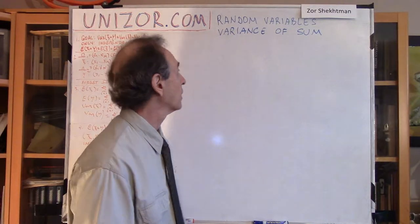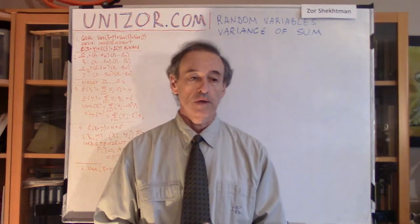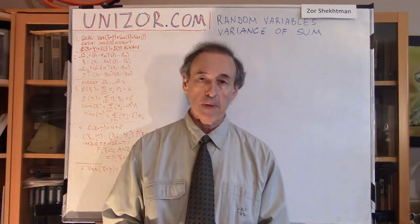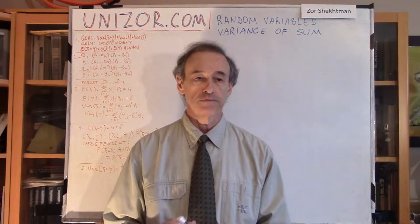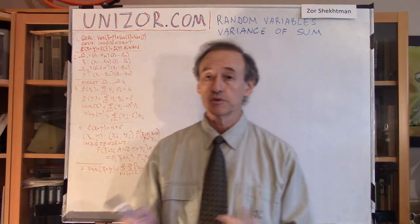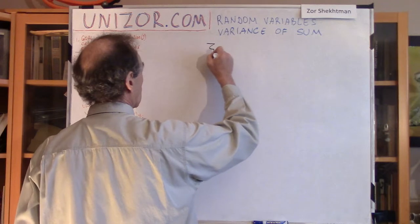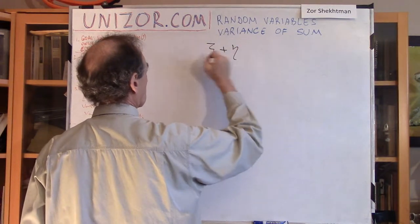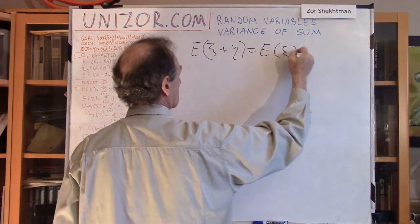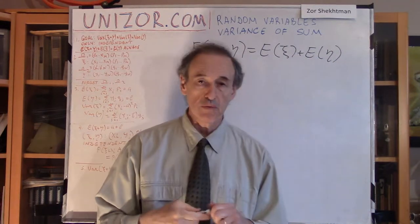We are talking about the variance of the sum of two random variables. We have already discussed that the expectation, or expected value, or mean of the sum of two random variables is equal to the sum of their expected values.